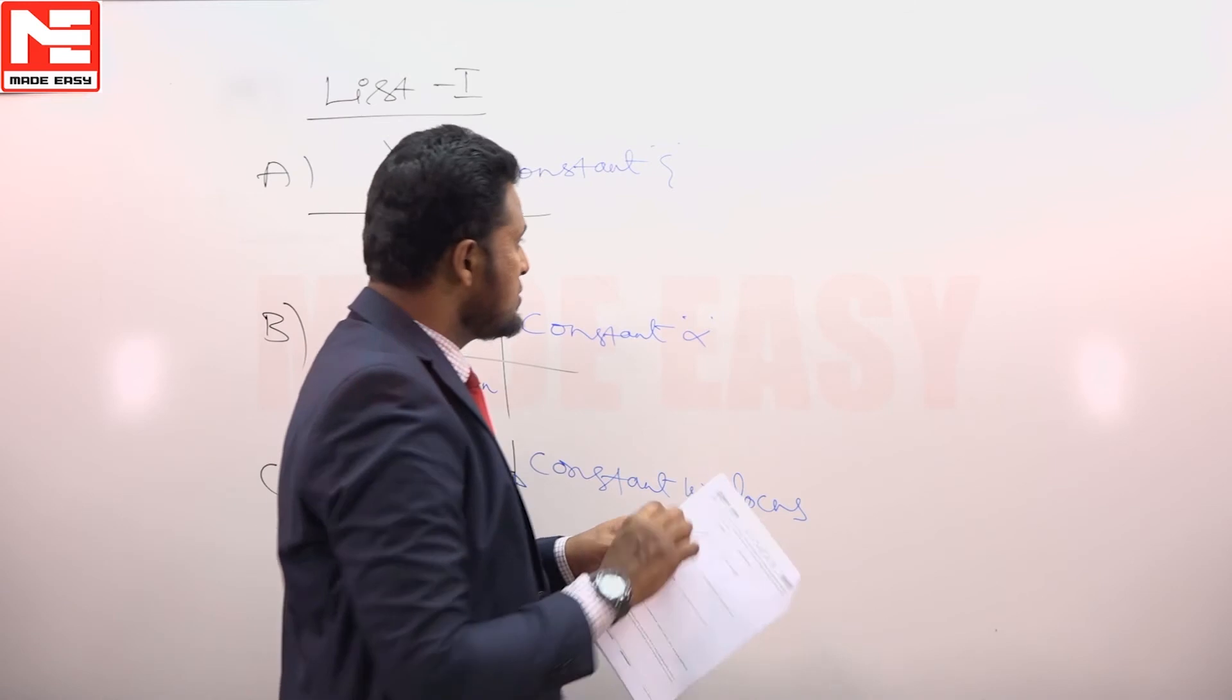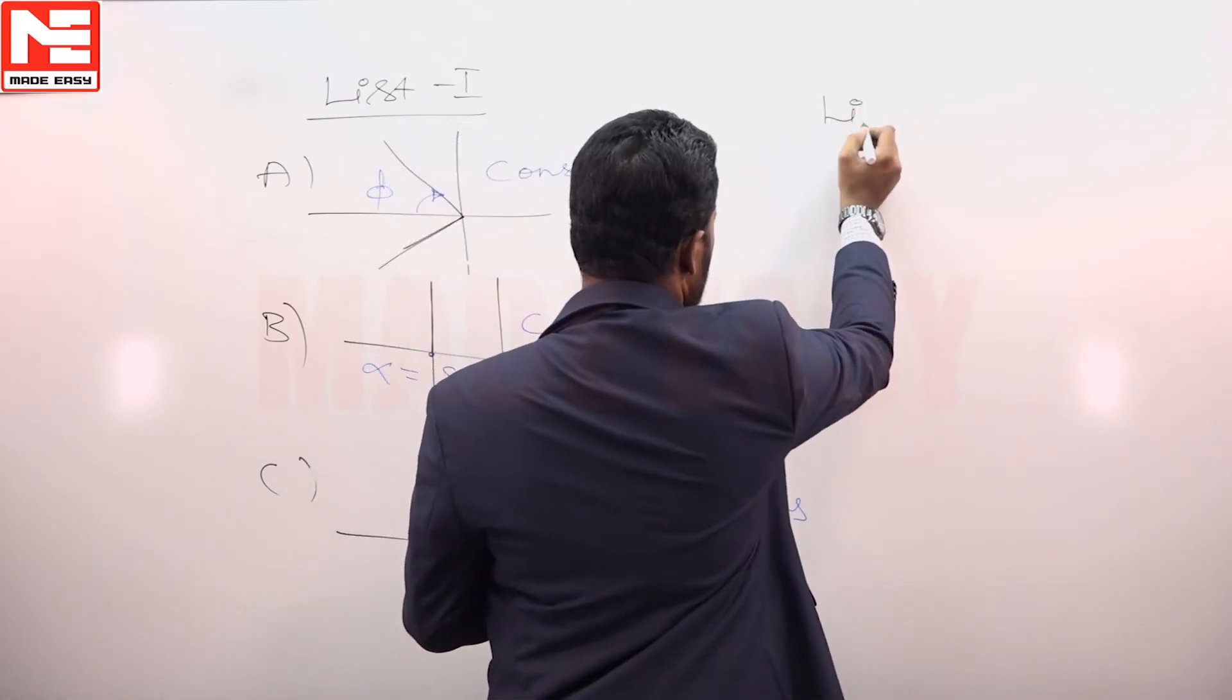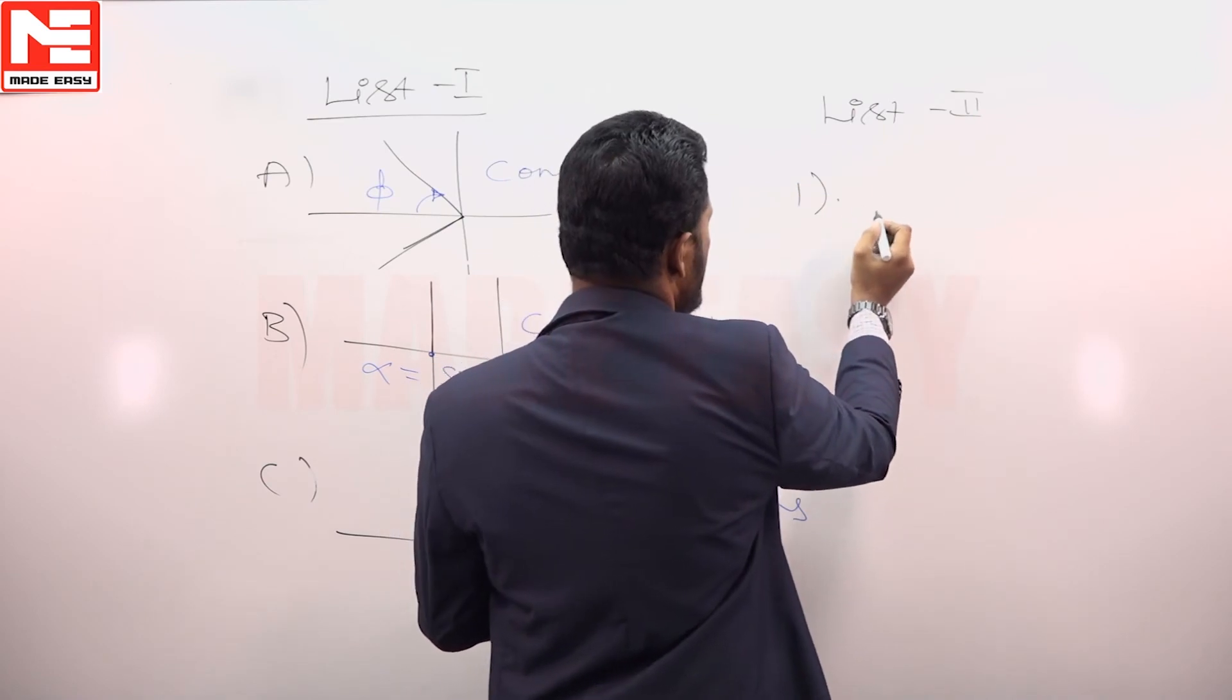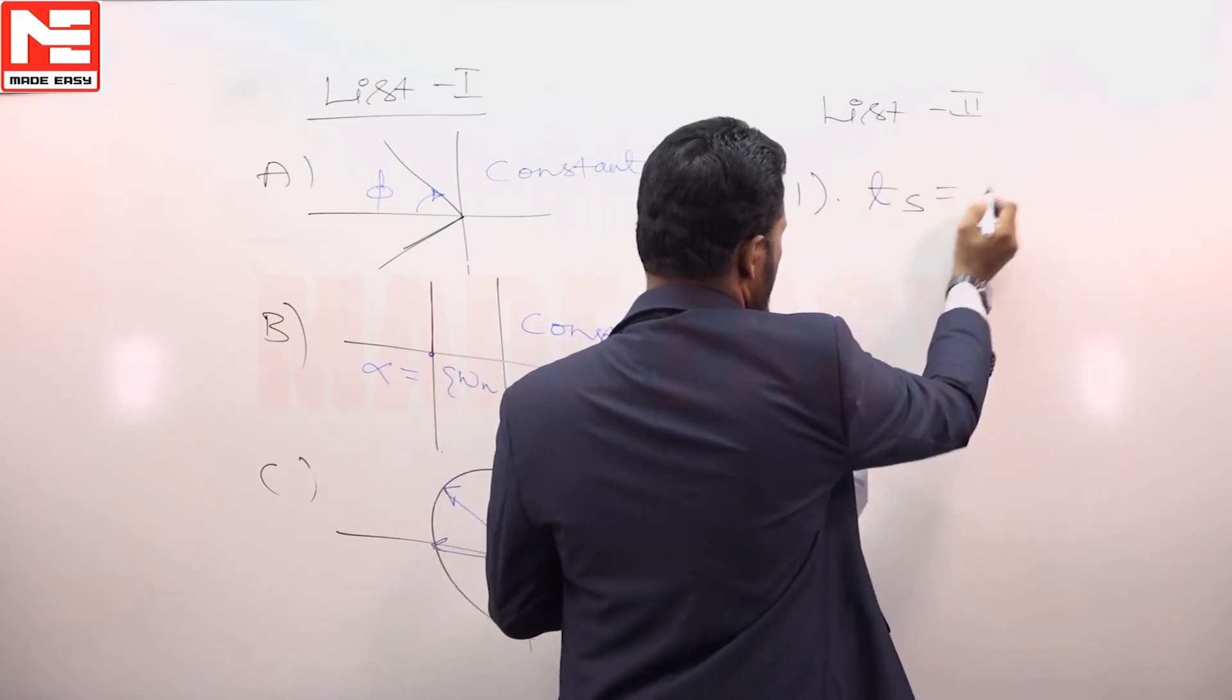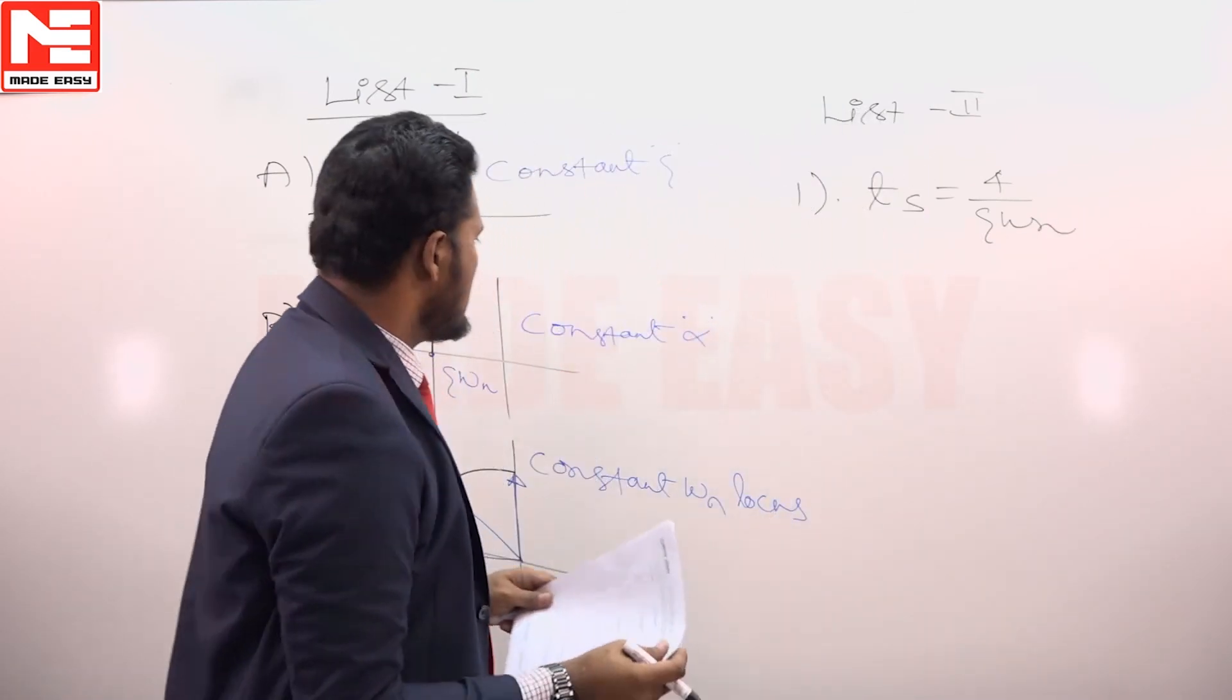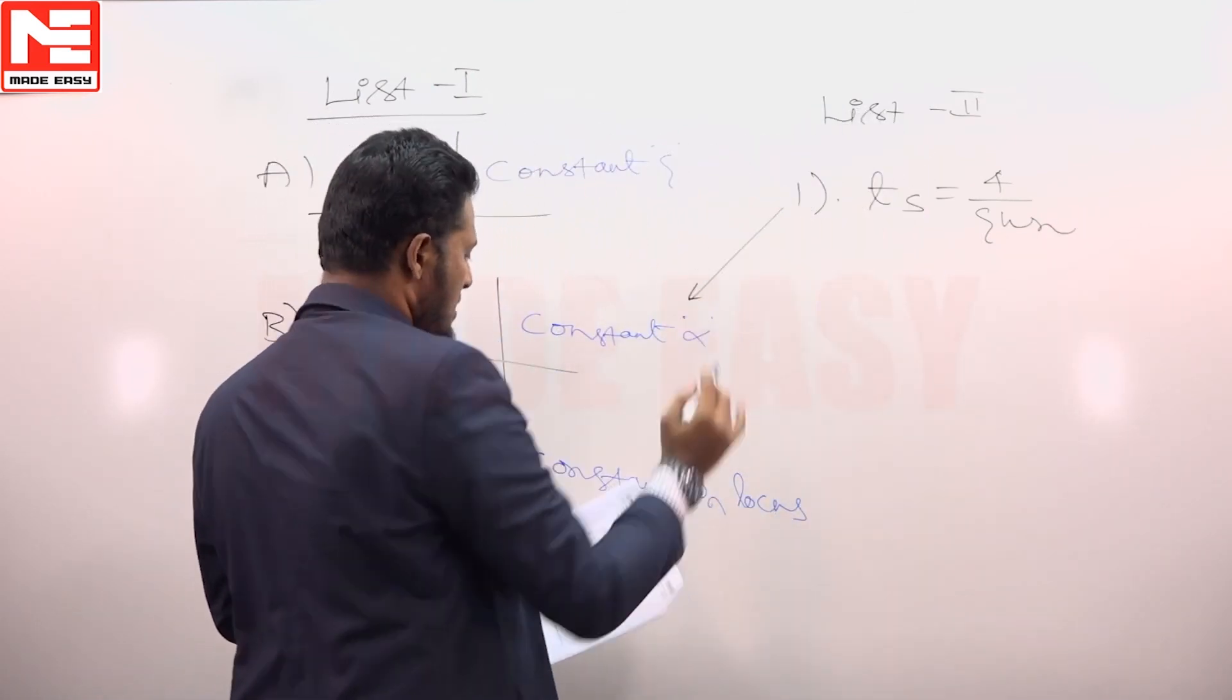In list 2, we have the first condition, settling time. Settling time is 4 by zeta omega n. Constant settling time is possible for constant alpha.